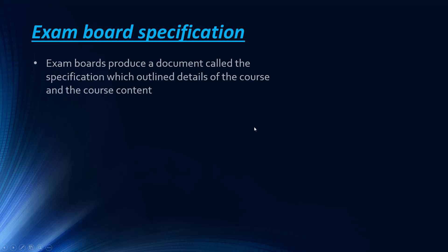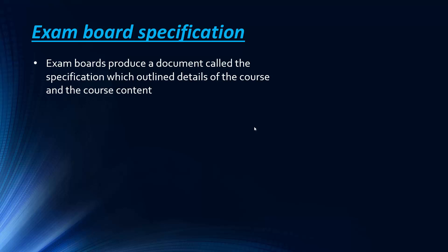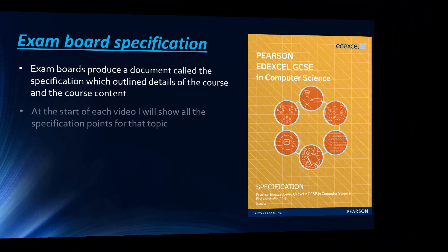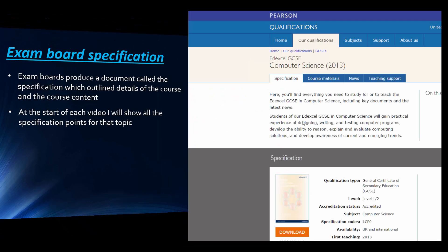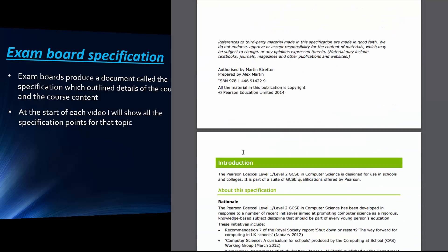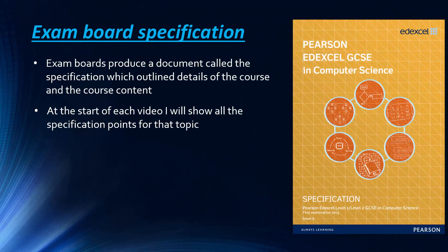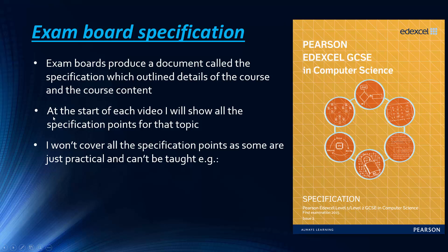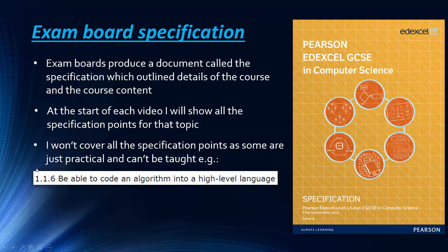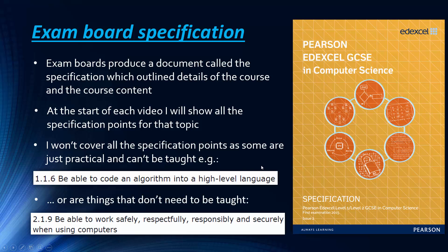The main thing I'm going to keep coming back to throughout this series is the exam board specification. Exam boards produce this document that outlines details of the course and the course content, basically telling you exactly what they're going to ask of you. It's available on the exam board website. The main tip I give people is to make sure you look at it and make sure you're learning the right content — it's very easy for a teacher to accidentally skip a point. If you work through the specification like I'm going to do in these videos, you can't really go wrong. At the start of each video I'm going to show you the specification points for the topic. I won't cover everything — some points are practical like coding, and there's also stuff that is relatively common sense, like how to work safely, which you can't really revise for.